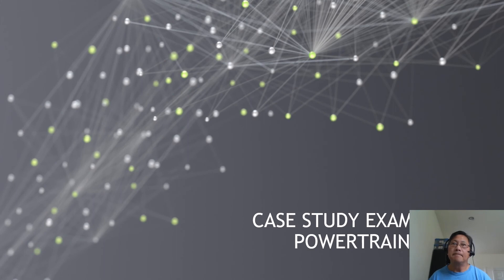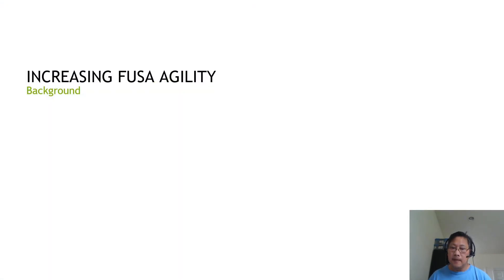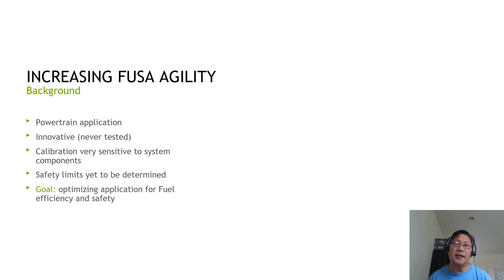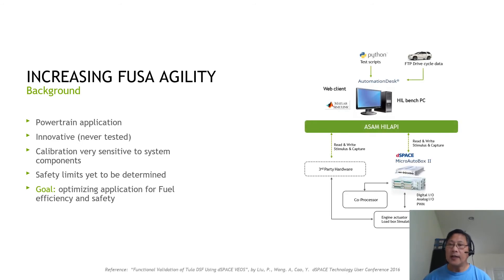Now let's look at the case study. I will attempt to make the case for increasing FUSA agility using a powertrain application. This powertrain application involved an innovative algorithm that was never tested, with calibration very sensitive to system components; safety limits also had yet to be determined, with the goal of optimizing the application for fuel efficiency and safety. In this example, there is a coprocessor interfacing with a microcontroller box simulating an ECU, driving actuators and receiving signals from traces from actual engines.